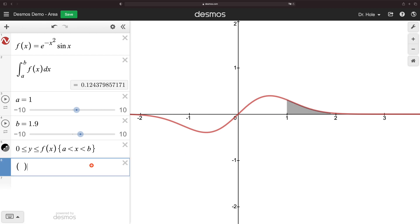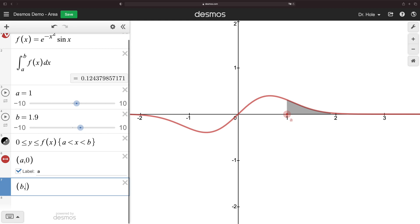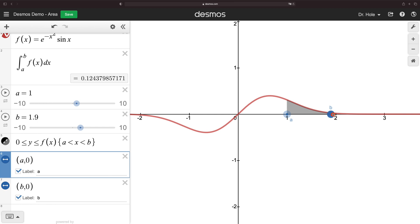Let's bring in those points a and b. We do a comma zero, label that up as the point a. Do the same thing for bringing in a point b, b comma zero, label that point b. And then a nice thing is, let's make both of these blue. A nice thing is we can slide them.